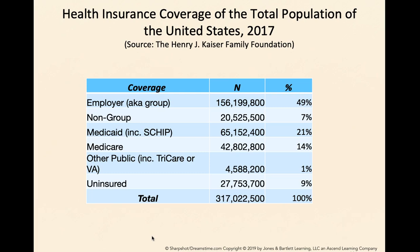This data is from the Kaiser Family Foundation website. In this column you will see the different types of coverage people have, and this column shows the number of people that fall under each category, and this would be the percentage. The total population of the United States is around 317,022,500, and of course that's an estimate. Because this is our universe or the denominator, that is 100 percent.